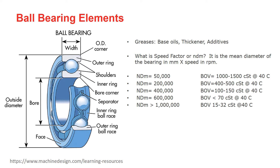You can learn more about grease in another recorded webinar. To choose the right base oil viscosity for the bearing, we need to calculate the speed factor or NDM. NDM is the mean diameter of the bearing in millimeters times the speed in RPM. The mean diameter is the outside diameter plus inside diameter divided by two. A low NDM means the bearing is rotating slowly. If the NDM is around 50,000, the base oil viscosity required for the grease is between 1,000 to 1,500 cSt at 40°C.